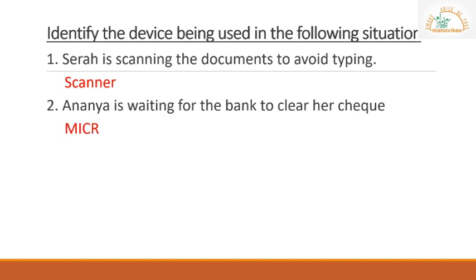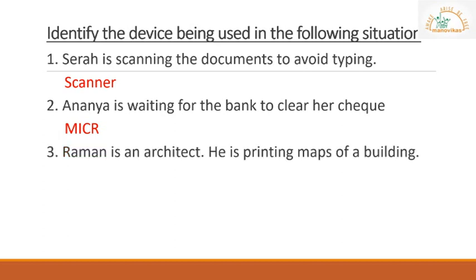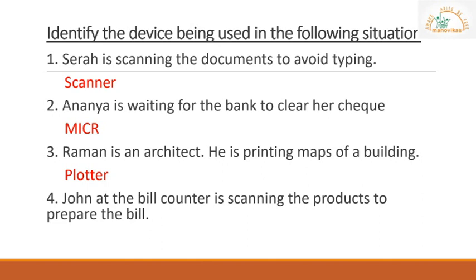Third question: Raman is an architect and he is printing maps of a building. The answer is he is using a plotter. Next: John is at the bill counter and scanning the products to prepare the bill. Which device is he using? The answer is a barcode reader. I hope you answered the questions before I gave you the answers. Let's continue with our presentation on output devices.